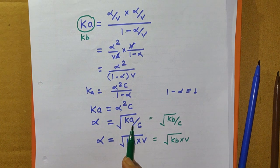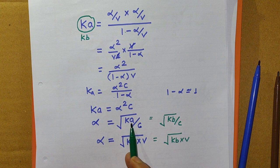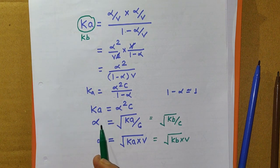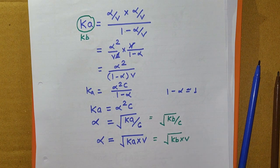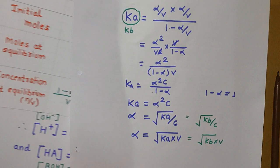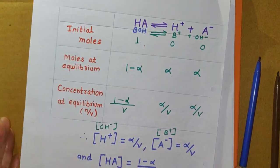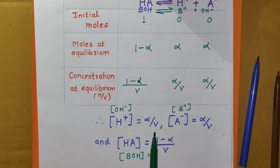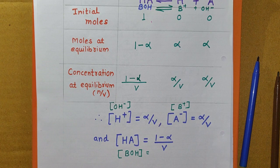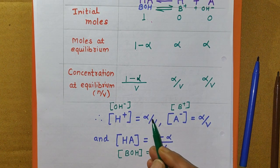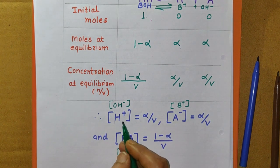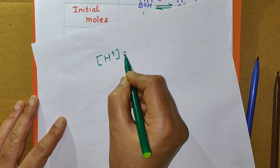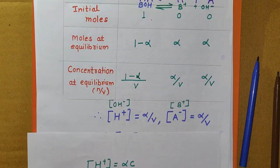By using these equations, if you know the value of Ka — which is constant at constant temperature — or the value of Kb, you can determine the value of alpha if you know the concentration of the solution, or vice versa. If you know the value of alpha, you can determine the value of Ka or Kb. We can also determine the concentration of H⁺ or OH⁻ in the solution. The concentration of H⁺ equals alpha/V, and concentration of OH⁻ equals alpha/V.